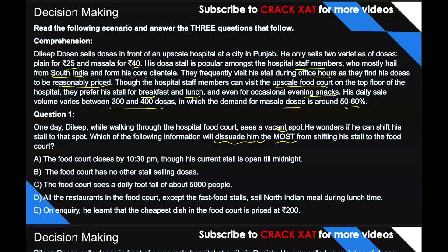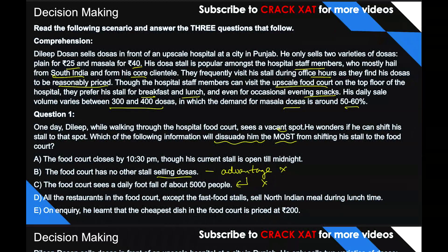Let's eliminate the easy options first. Option B: the food court has no other stall selling dosas — if you are unique at a place, you have an advantage over others. So option B is actually an advantage, not a discouragement. Option C: the food court sees a daily footfall of about 5,000 people — his daily sale was only 300–400 dosas, so this footfall is also an advantage for DD. Options B and C are eliminated because they are advantages.